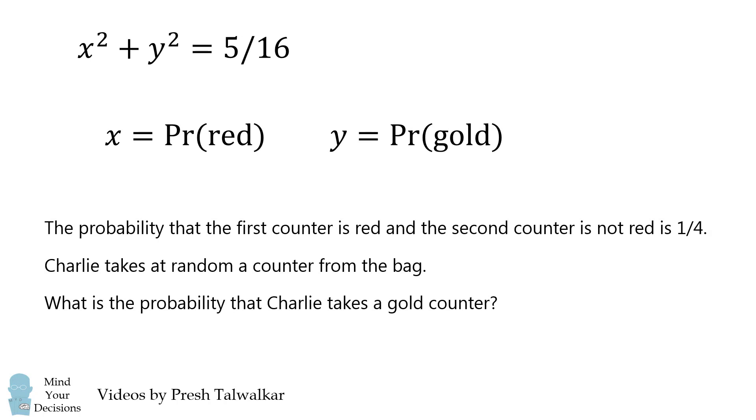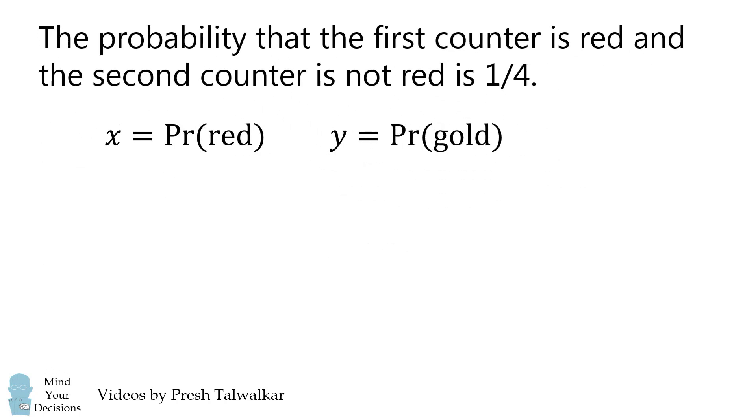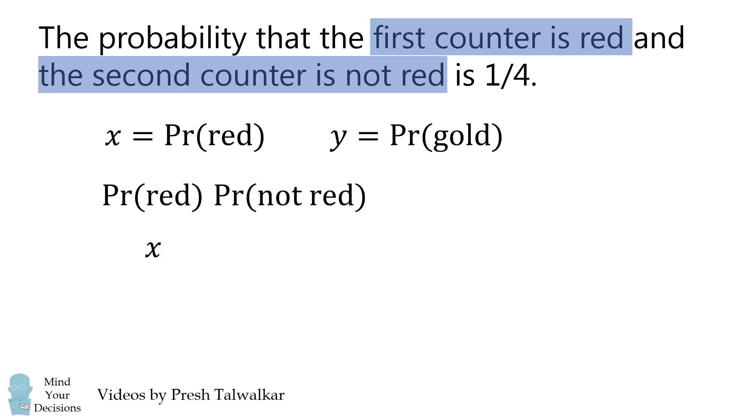Let's then focus on the next sentence. What's the probability that the first counter is red? Well, that'll be x. We then need the probability that the second counter is not red, so we want to multiply these two probabilities.